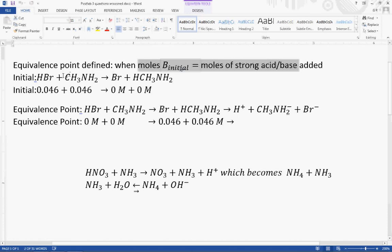If you have a base with five moles, you need to add five moles of your acid to reach your equivalence point. So in this scenario we've got HBr and CH3NH2.